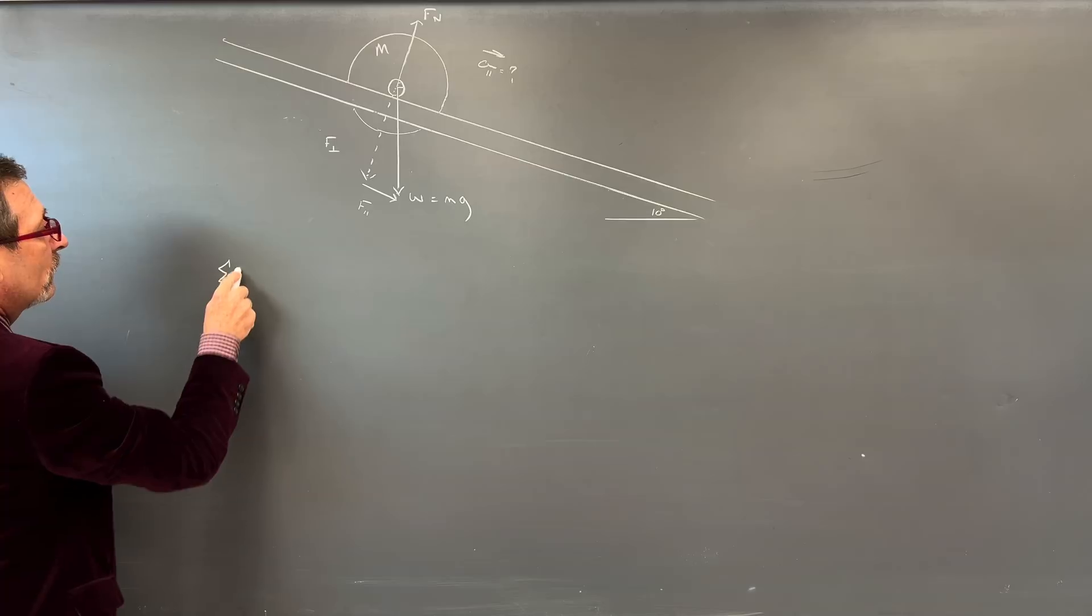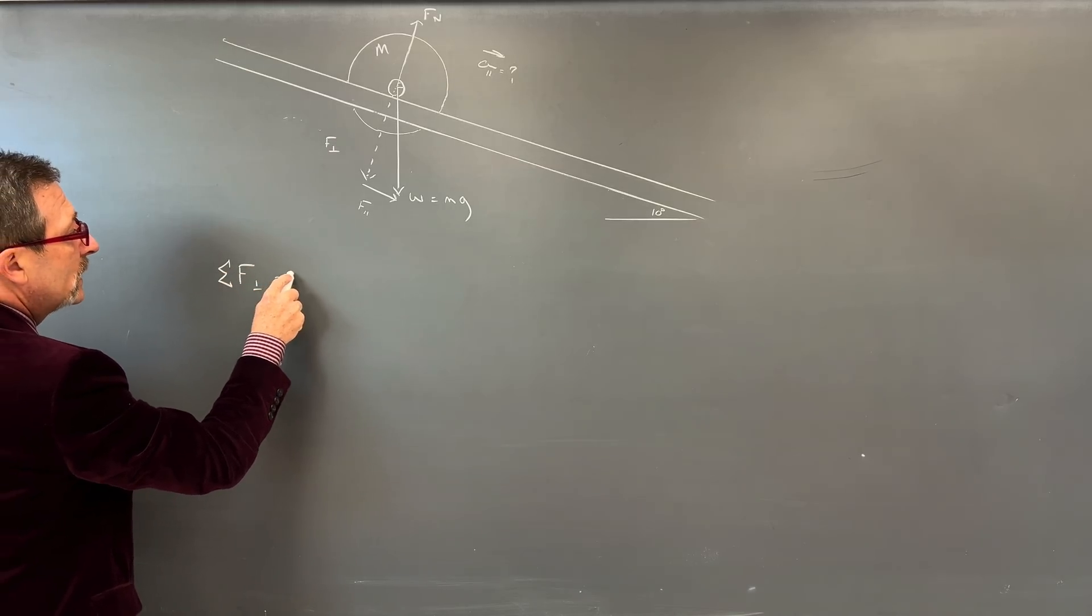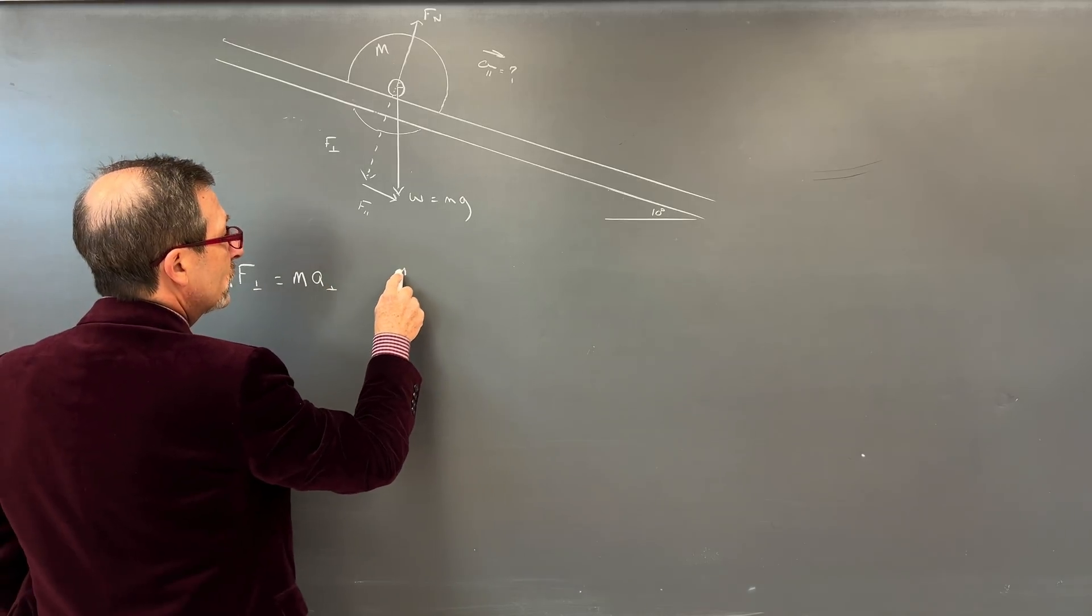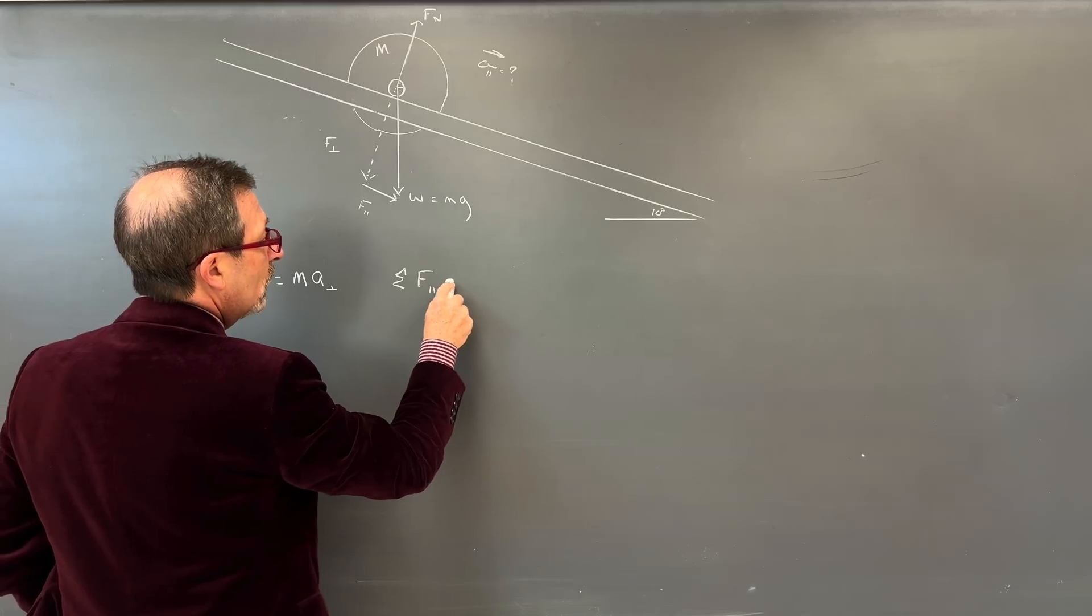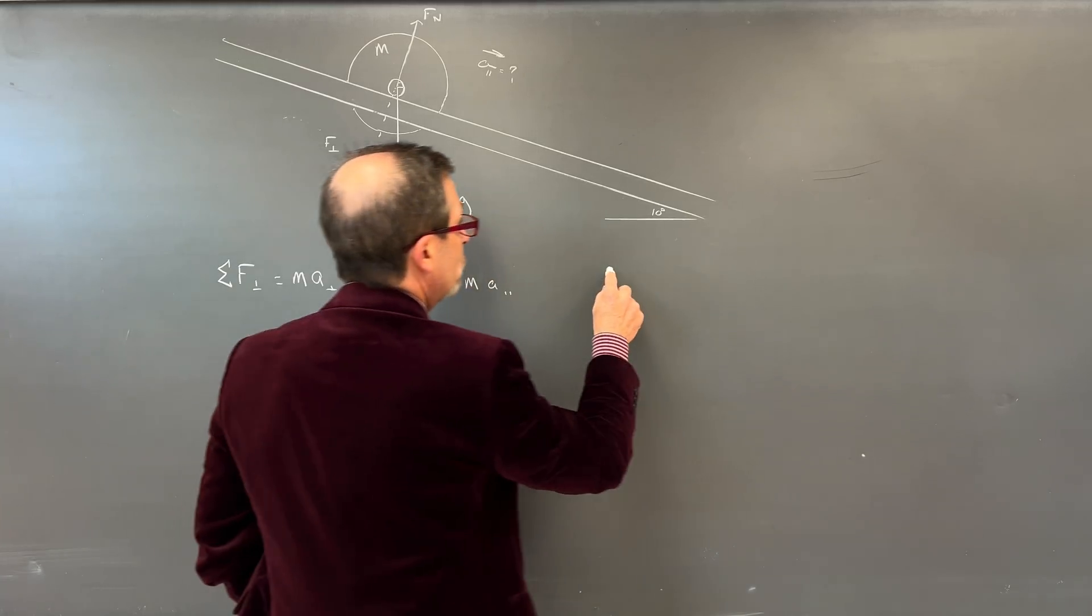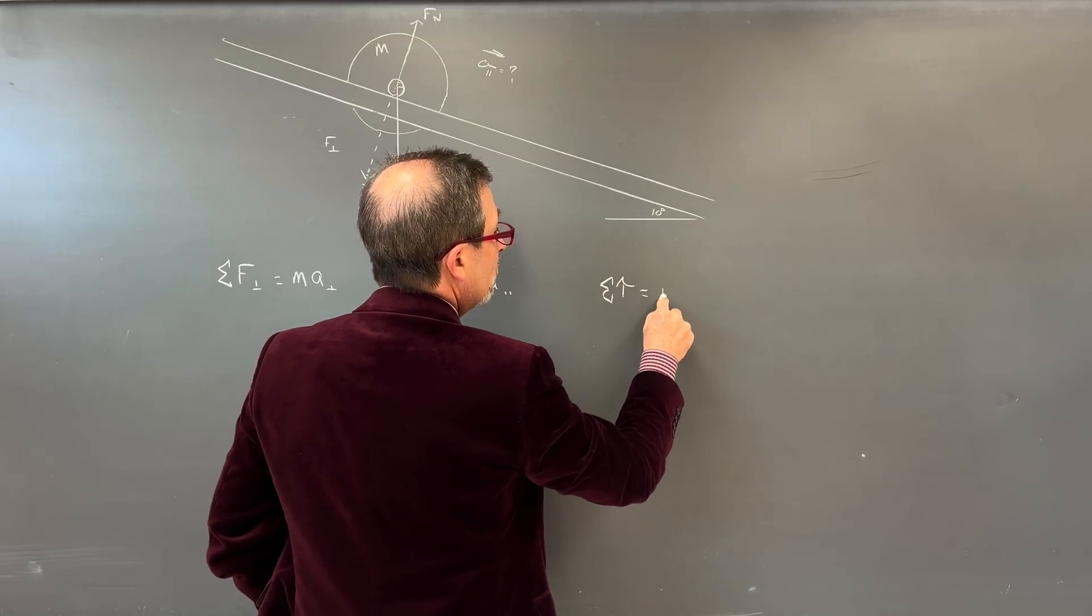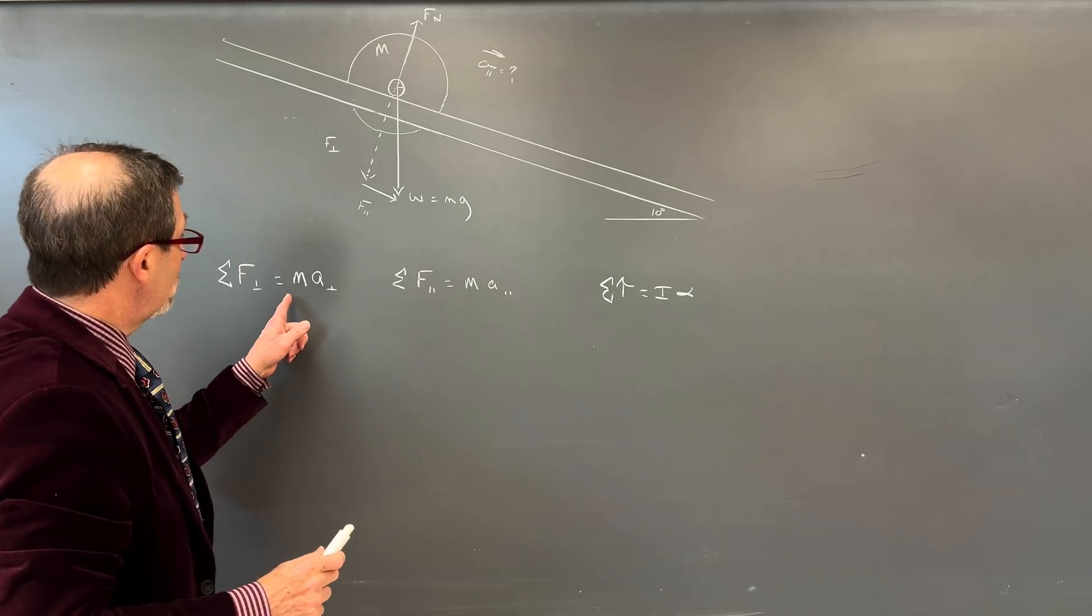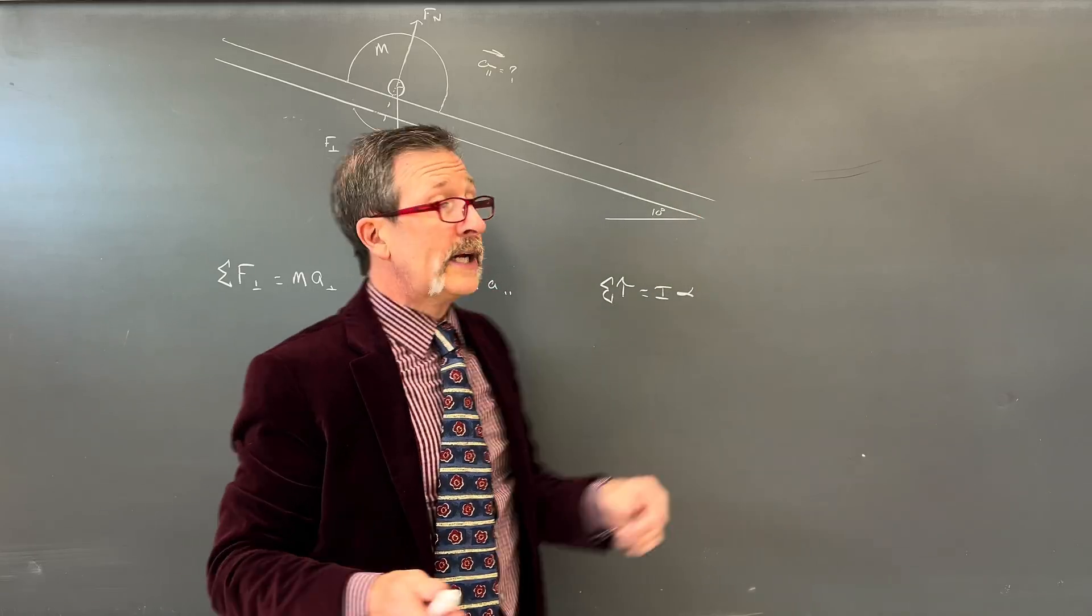Now we also have to do the torques. So let's go ahead and start writing these out. I could say the sum of the forces in the perpendicular axis equals mass times acceleration in the perpendicular.